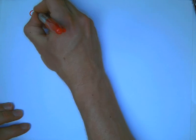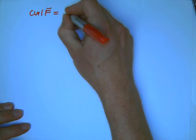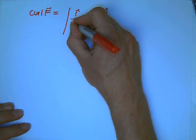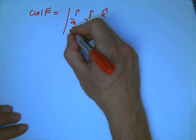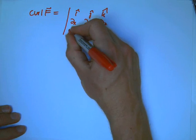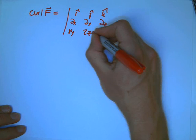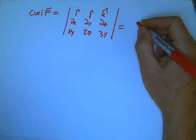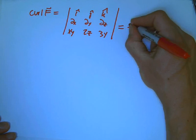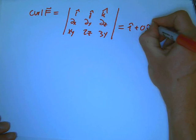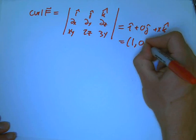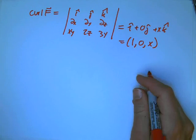So let's do curl F. That's just a straightforward calculation with partial derivatives, d by dx, d by dy, d by dz, of xy, 2z, 3y. And you can do that yourselves. You get i plus 0j plus xk, or in the somewhat more compact notation, 1, 0, x.